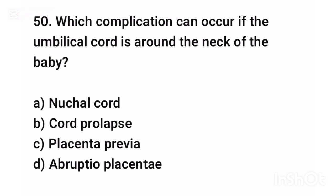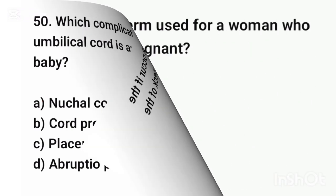Question number fifty. Which complication can occur if the umbilical cord is around the neck of the baby? The correct answer is option A: Nuchal cord.